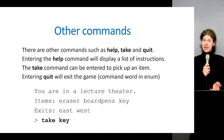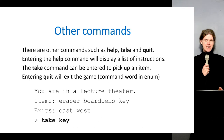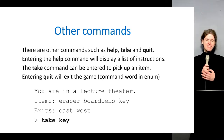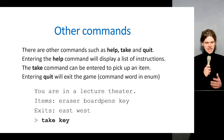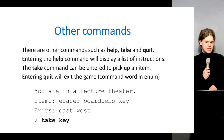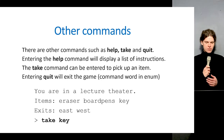We've also got the take command, implying items. The idea is that you'll create items to be collected throughout your game in different locations — items that might help you score more points, unlock certain rooms, or fulfill the goal. Here we've got an example listing items available in a particular location: eraser, board pens, key — if we're in the lecture theater — along with the available exits.